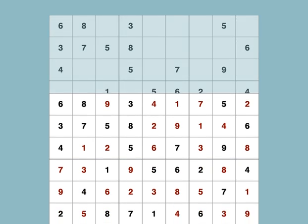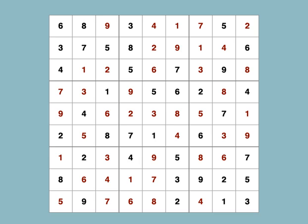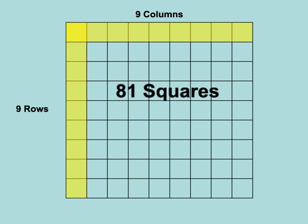Sudoku is a number puzzle that relies on a few simple rules. A typical Sudoku game starts with a grid that has 9 rows and 9 columns, for a total of 81 squares.